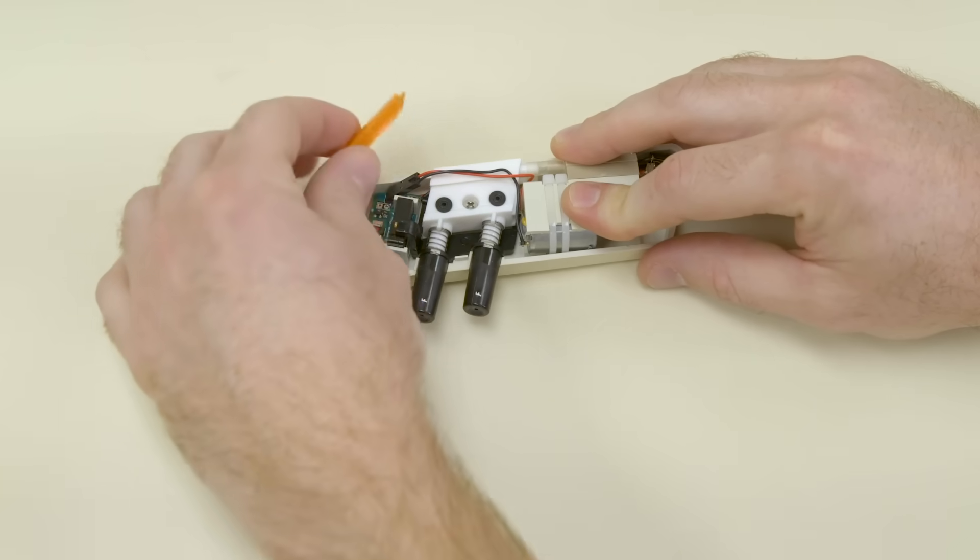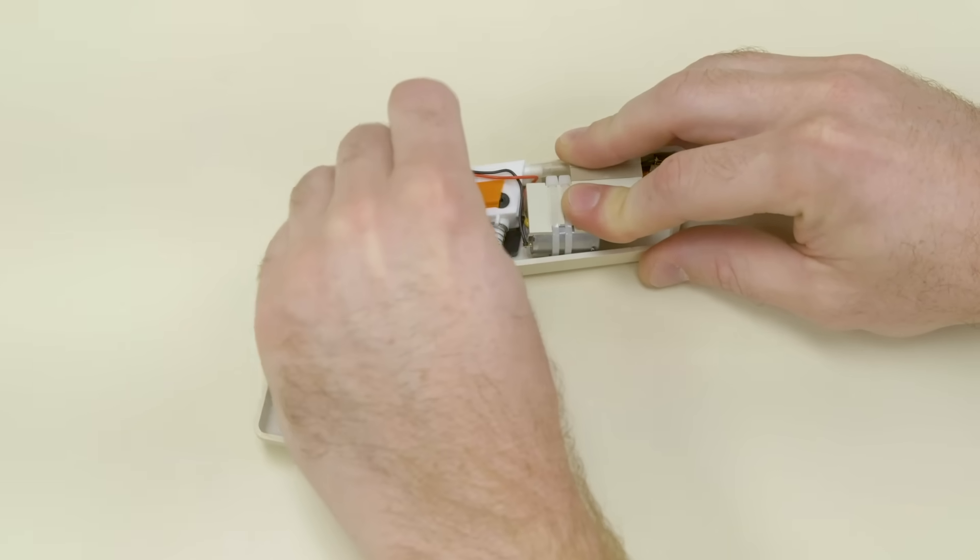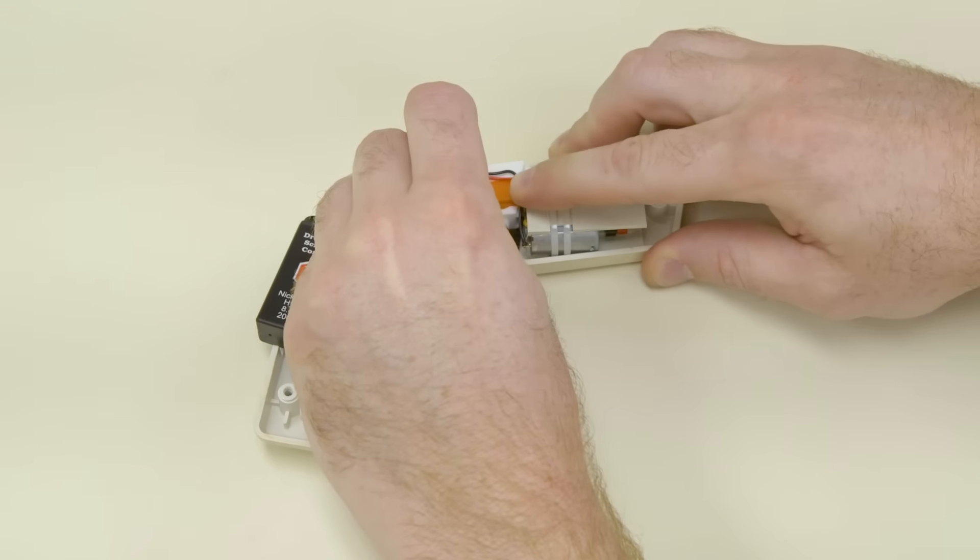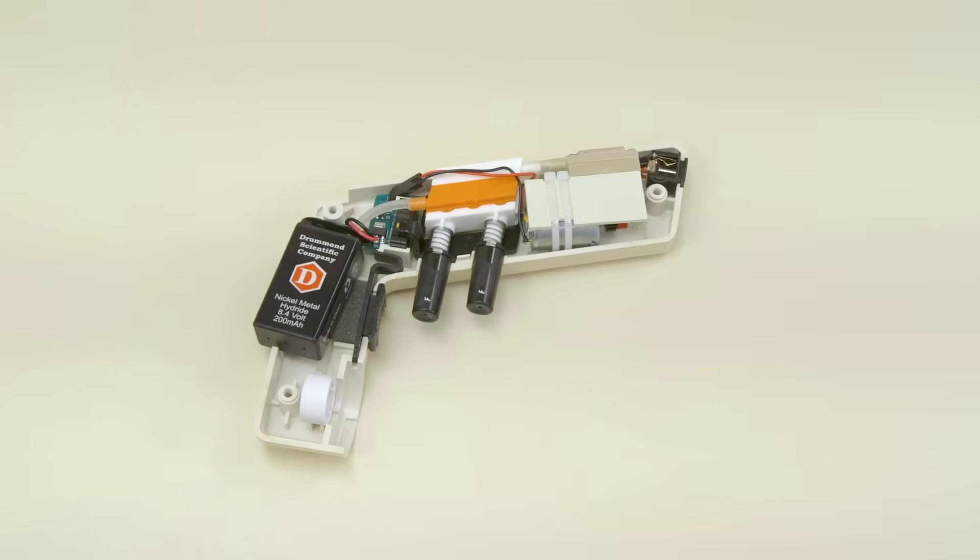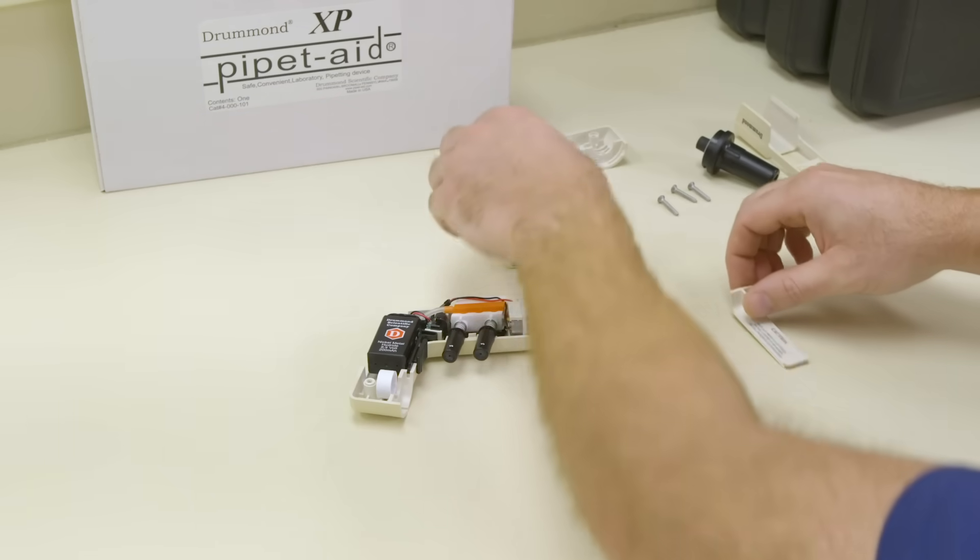Now slide the cover back into place, making sure it is even on both ends of the valve body. Then put the device back together.